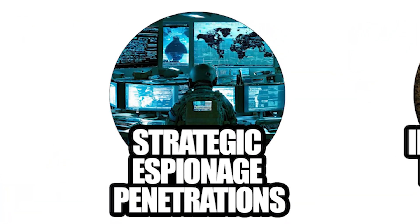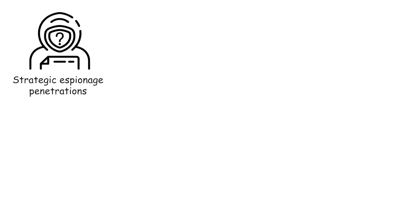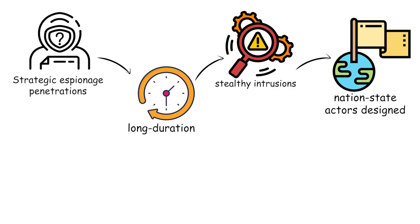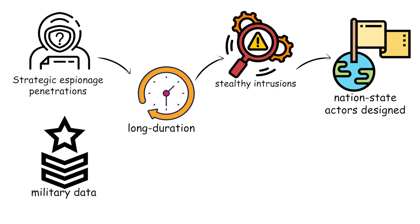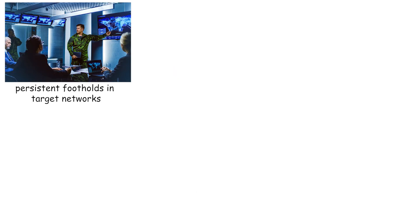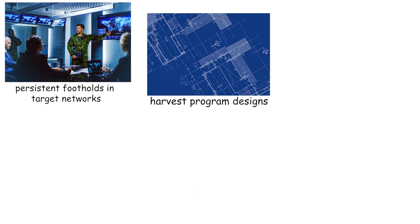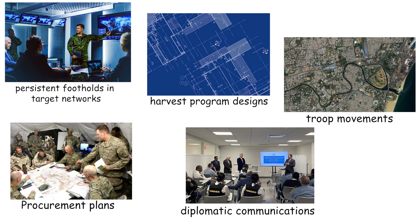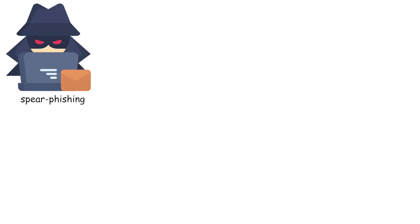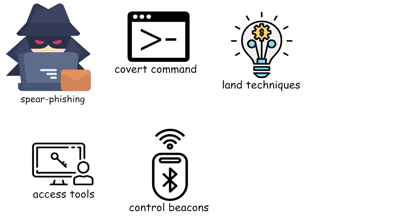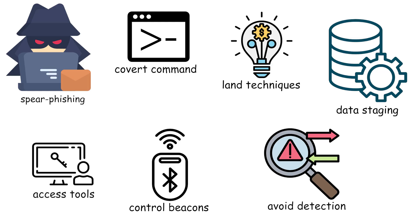Strategic espionage penetrations are long-duration, stealthy intrusions by nation-state actors designed to exfiltrate classified military data, industrial secrets, and policy intent. These operations establish persistent footholds in target networks, harvesting program designs, troop movements, procurement plans, and diplomatic communications over months or years. Execution uses tailored spear phishing, custom remote access tools, covert command and control beacons, living-off-the-land techniques, and careful data staging to avoid detection.